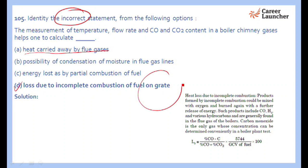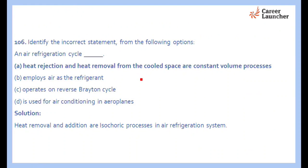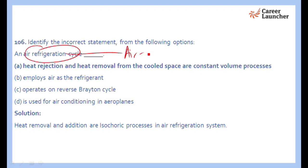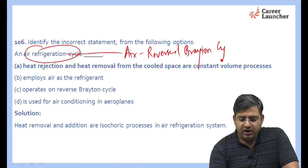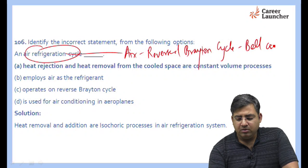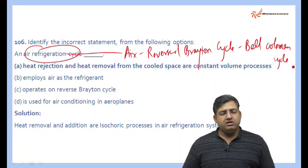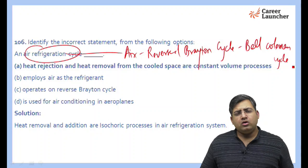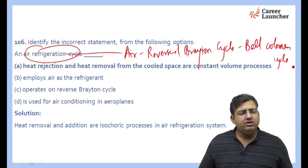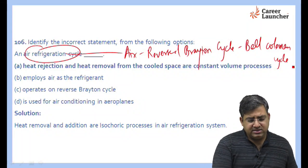The next question asks to identify the incorrect statement about the air refrigeration cycle. The medium used is air and it is based on the reversed Brayton cycle, also called the Bell-Coleman cycle. The reversed Brayton cycle has two constant pressure processes and two isentropic stages. It will not have any isochoric or constant volume stages. So the incorrect answer is A — heat rejection and heat removal from the cooled space are constant volume processes.